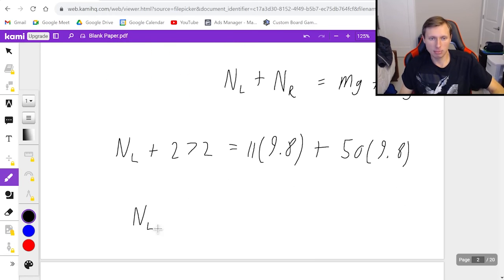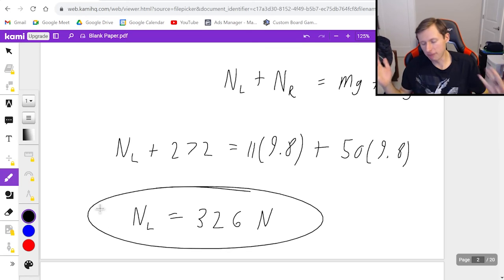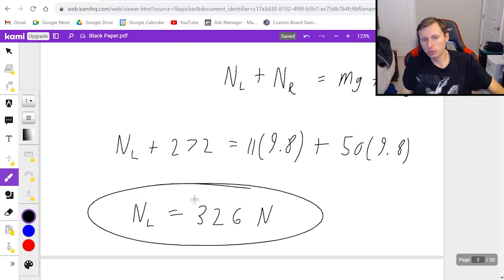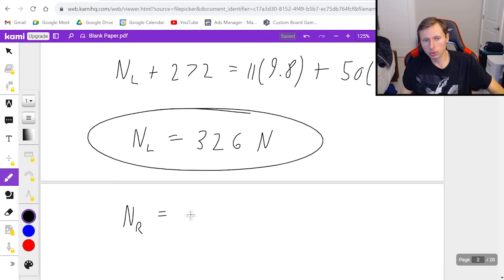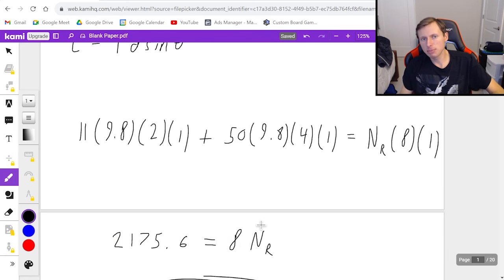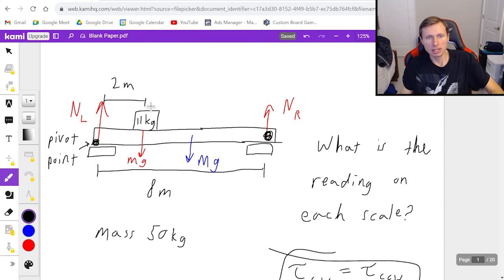Then I just solve this using algebra and I will get a final answer of 326 newtons. And there is the left normal force. One last thing I will note: the right normal force was 272, so the left one is higher. That makes sense because if I look back at my original picture, the 11 kilogram mass is closer to the left side. So of course that normal force should be higher on the left side. That makes sense to me.